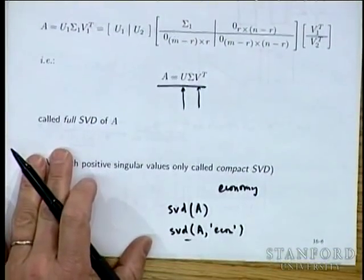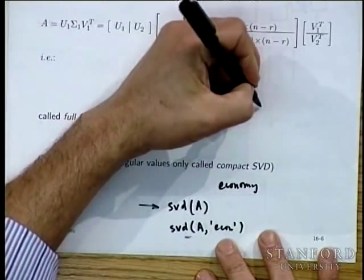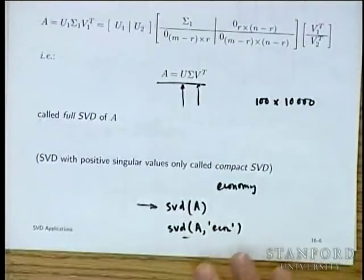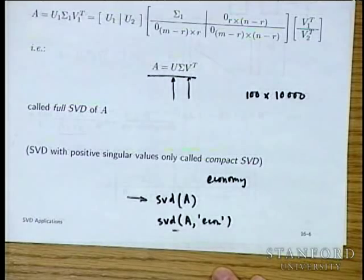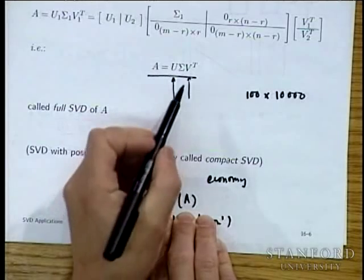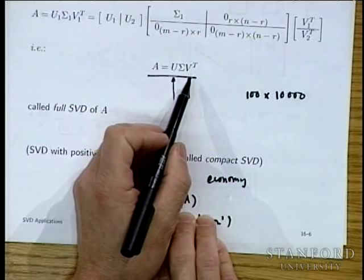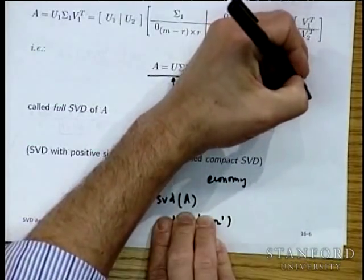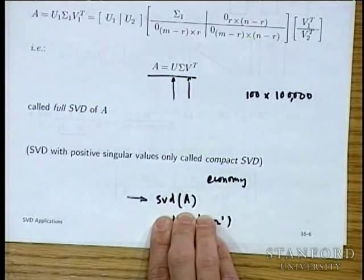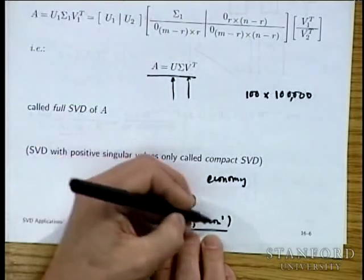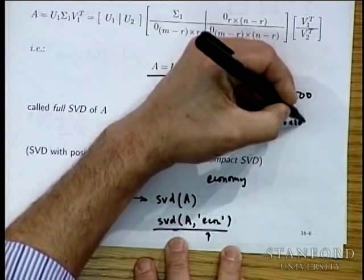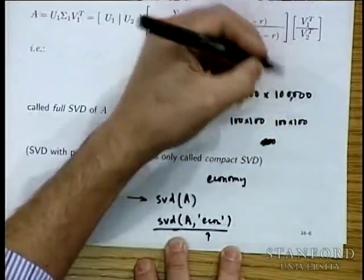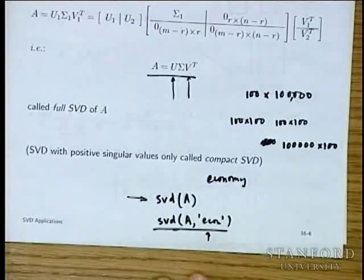If A is 100 by 10,000 — or 100,000 — typing the full SVD will return V as a massive dense matrix that can crash your session. Using the economy SVD returns manageable sizes. Unless you specifically want the full SVD, use the economy version.